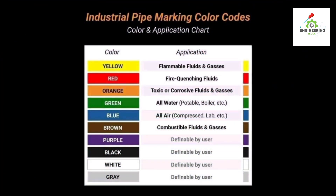Welcome. We will discuss industrial pipe marking color codes, their applications, and where these colors are used. First, yellow color is used for flammable fluids and gases. Red color is used for fire quenching fluids. Orange color is used for toxic or corrosive fluids and gases.